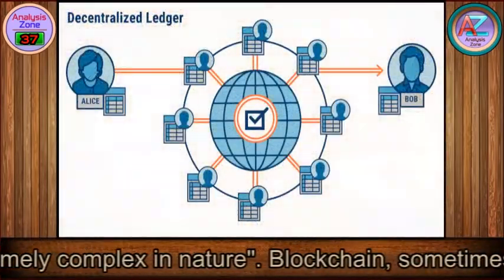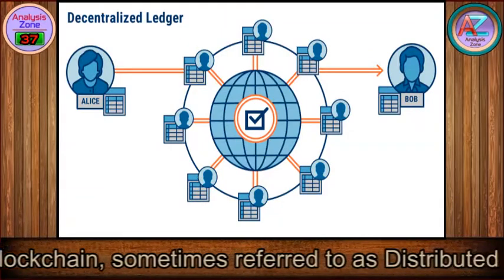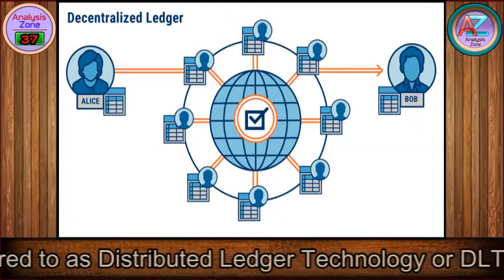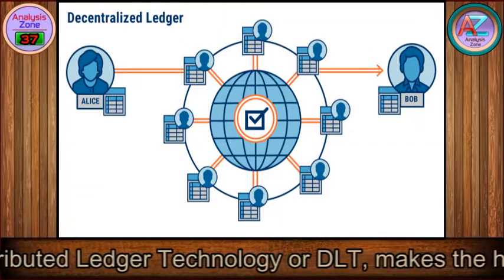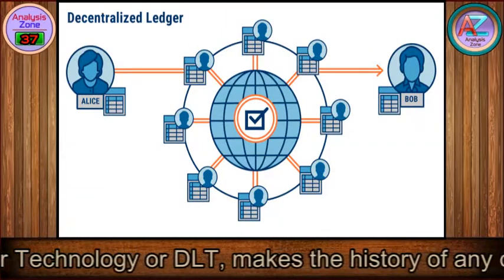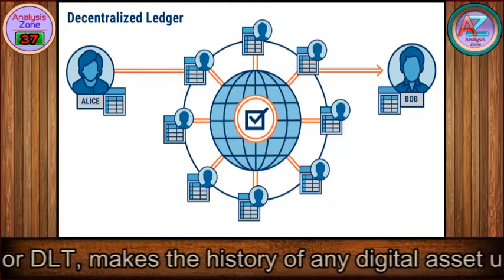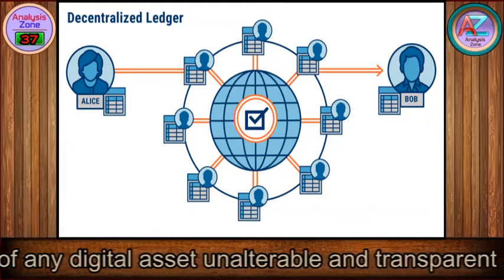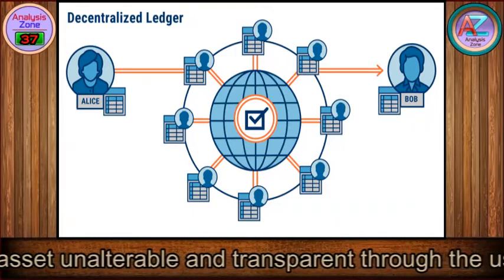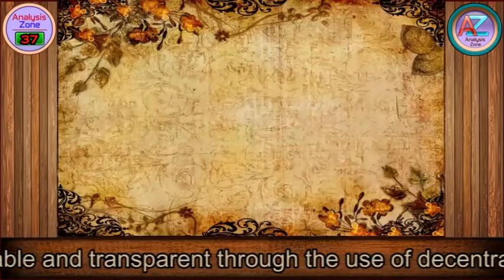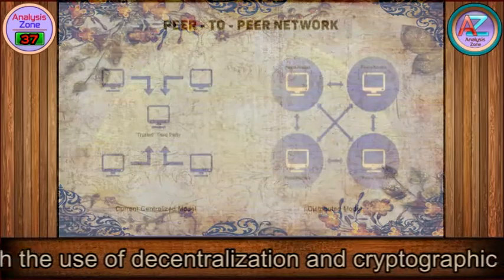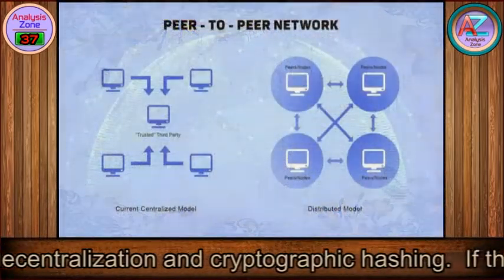Blockchain, sometimes referred to as distributed ledger technology or DLT, makes the history of any digital asset unalterable and transparent through the use of decentralization and cryptographic hashing.